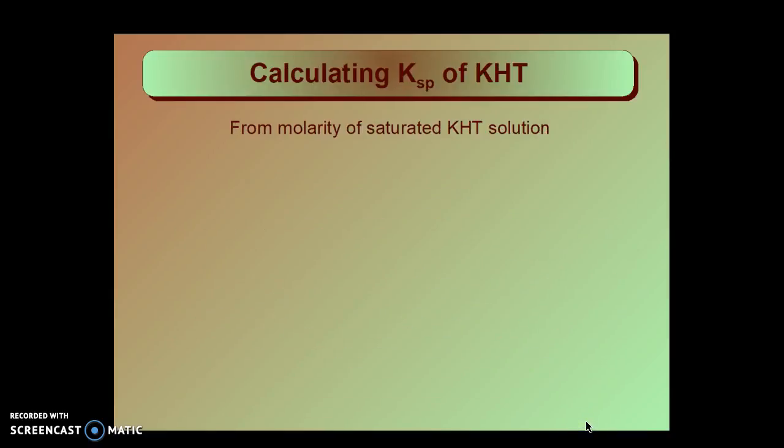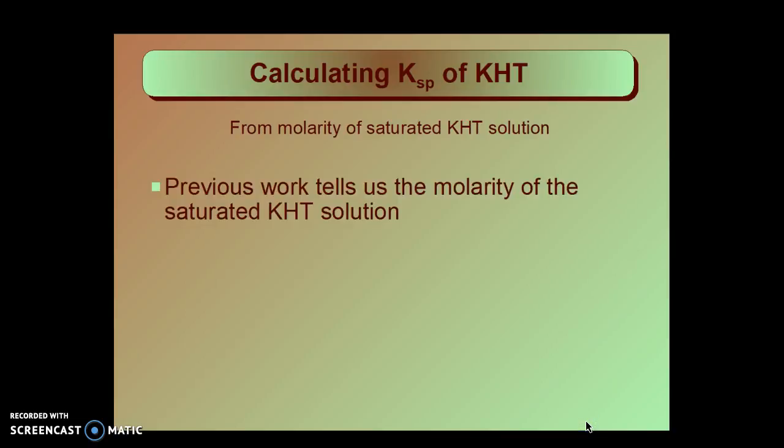Here's the calculation from the molarity of the saturated KHT. Previous work, that is what we've done up till now on this slide series, gives us the molarity of the saturated potassium hydrogen tartrate solution. That's both the tartrate, hydrogen tartrate, and the potassium ion. They are equal to each other because they both came from the potassium acid tartrate.